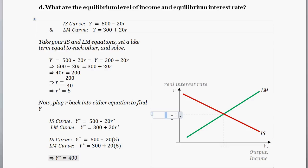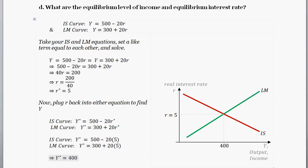Graphing these together, the intersection where the IS curve meets the LM curve occurs at output of 400 and real interest rate of 5. That's the equilibrium. Hopefully this was helpful — if you have any questions, let me know. If you found this useful, be sure to give it a thumbs up. Thanks, and have a good day.